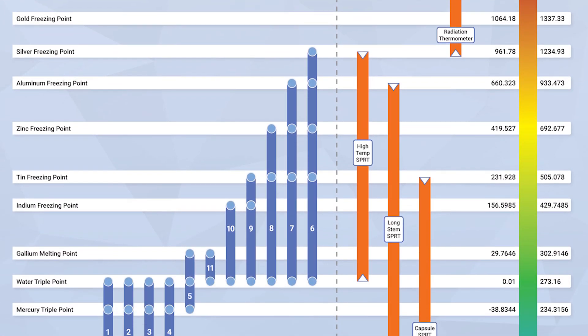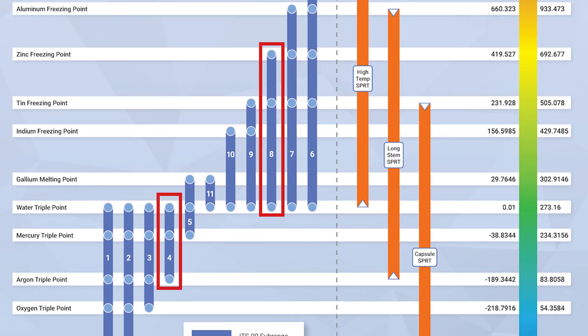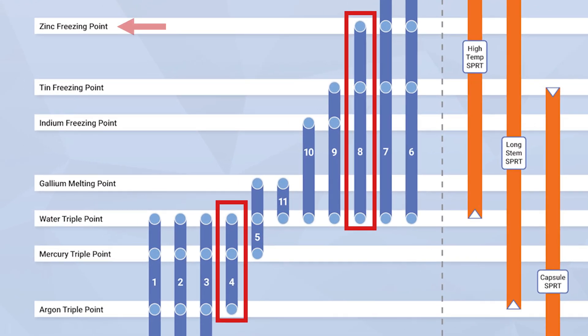The ITS-90 sub-ranges used in this demonstration will be four and eight, covering the freezing points of zinc and tin, the triple point of water, the triple point of mercury via comparison calibration in a liquid bath, and the triple point of argon via comparison calibration using a liquid nitrogen comparator.